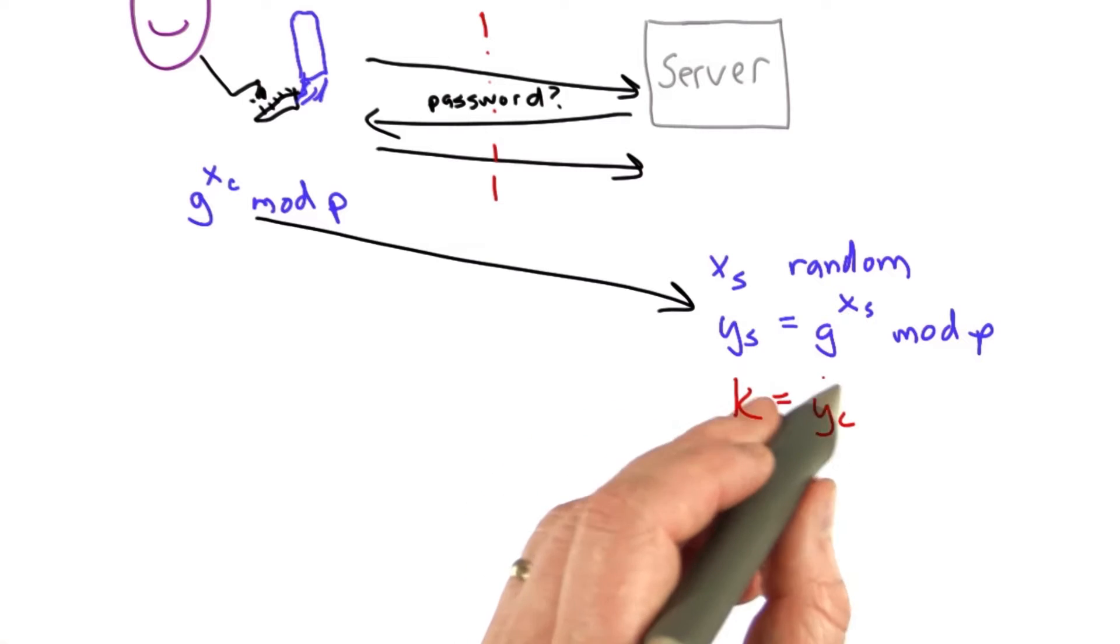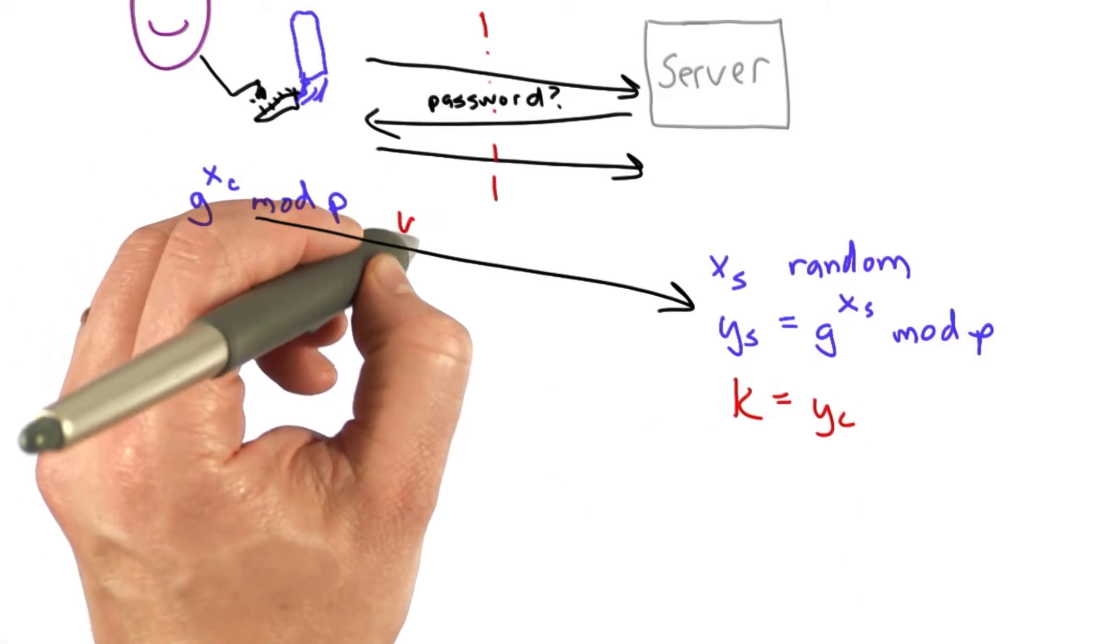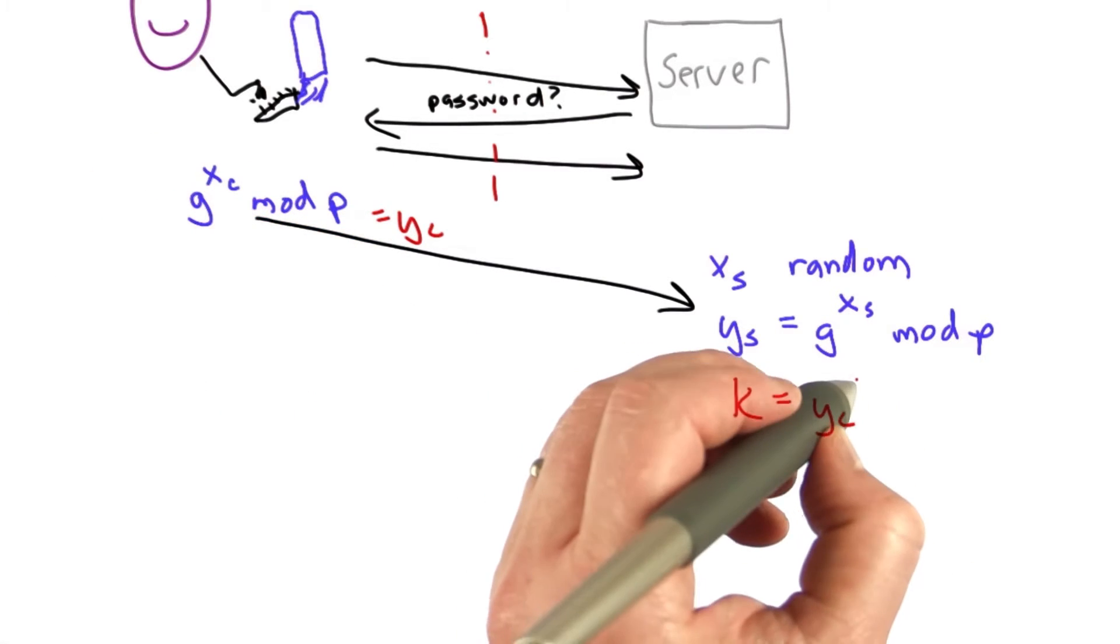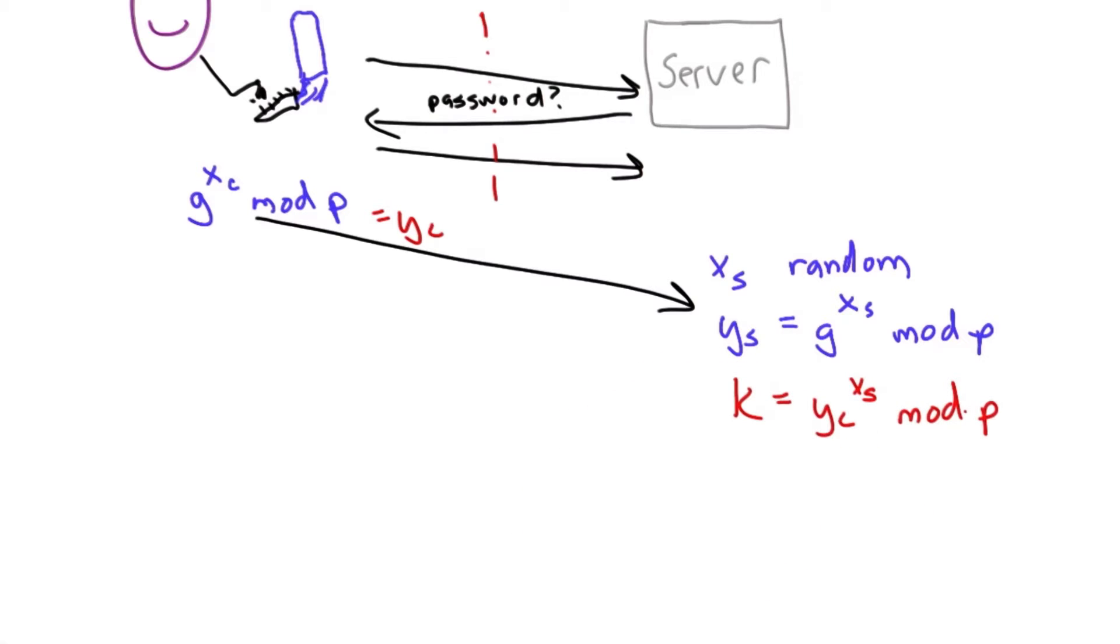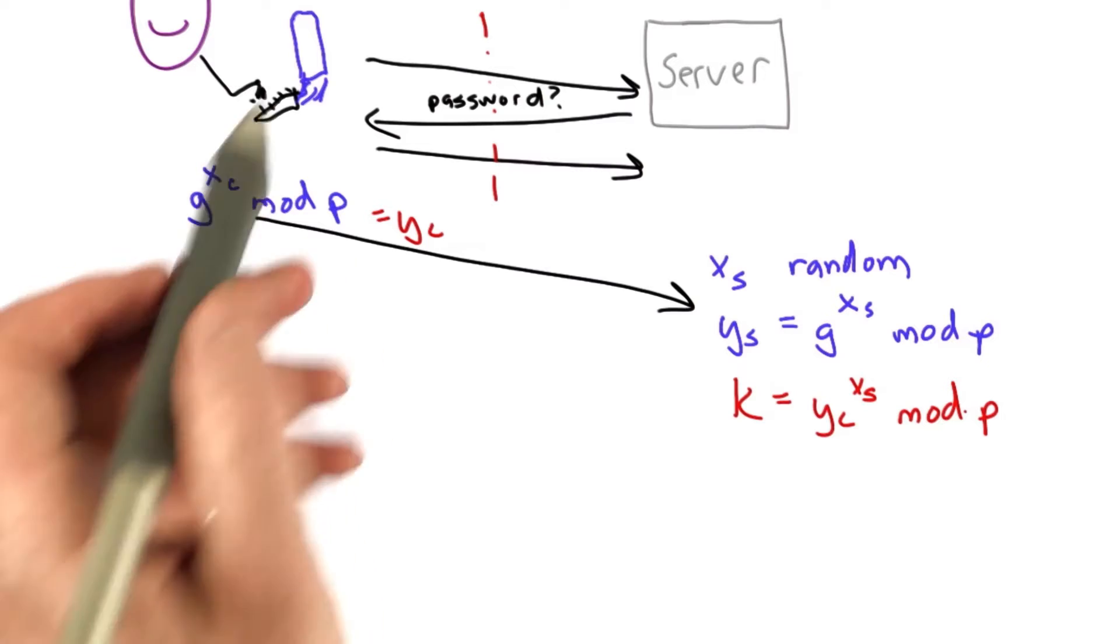And then the server computes the key, which is yc, the value transmitted here, raised to the xs power. So far this is all the same as what's done in Diffie-Hellman. Just change the names of the variables to match the client and server.